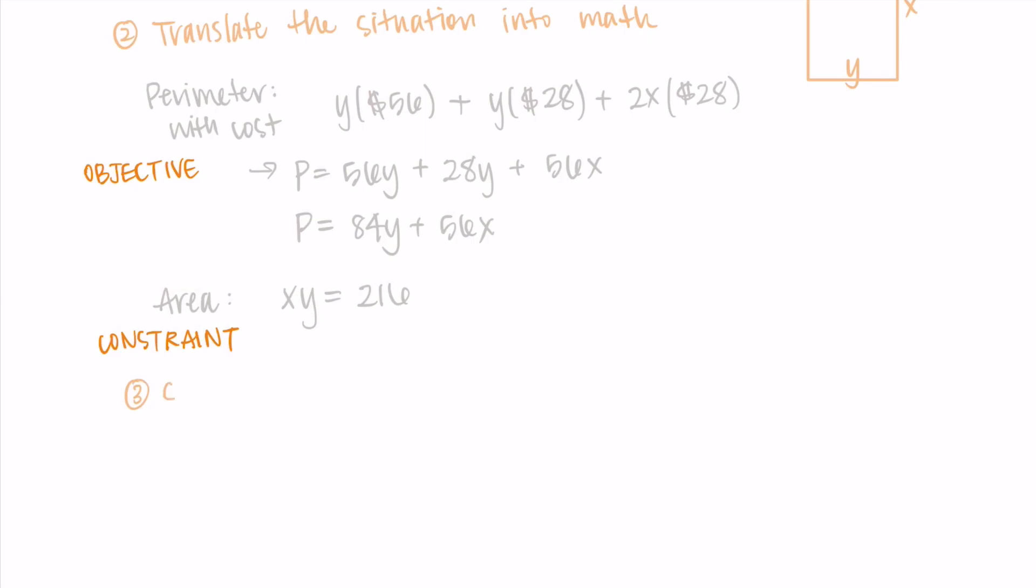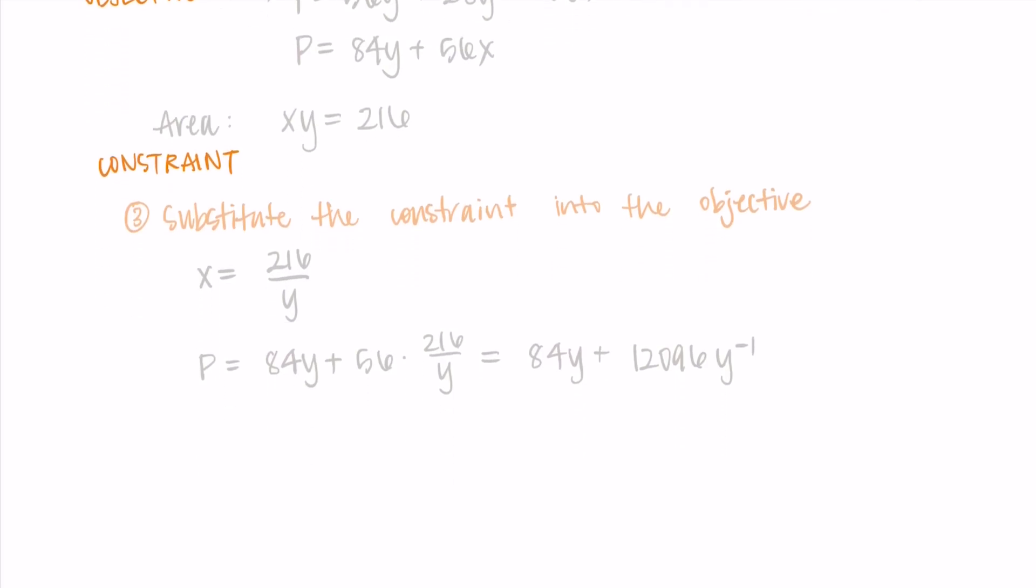For the third step, we need to substitute the constraint into the objective. Remember, we're trying to take the derivative of the objective equation in order to find the critical numbers that correspond to the minimum. So we'd like to do this with only one variable. I'm going to solve for x this time, just to kind of show you that you can solve for x or y. So here x is equal to 216 over y. I can substitute that into my perimeter, my objective. So I'm getting that 84y plus 12,096y to the negative one is my objective equation. Here I just moved that y up to the numerator and made the exponent negative since I know I'm going to need its derivative.